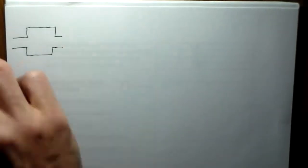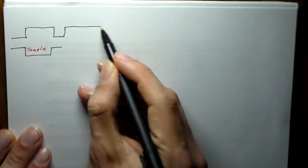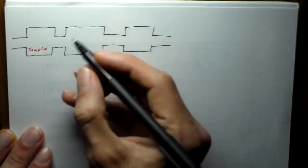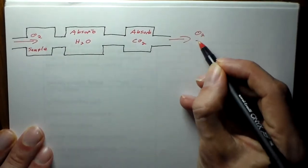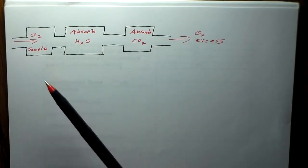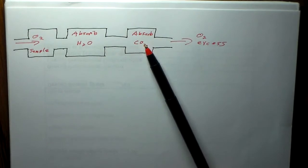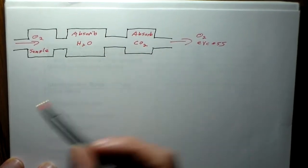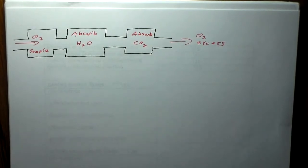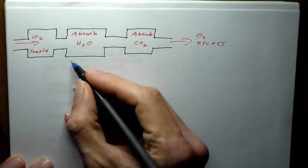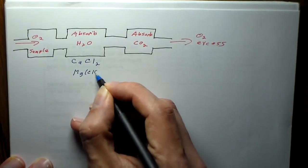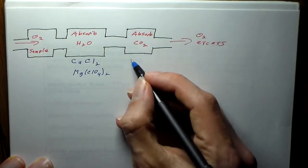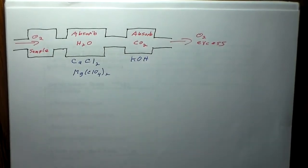So here we have our sample chamber and then two absorption chambers. These absorption chambers contain different absorbents. You need something here that absorbs water, which could be calcium chloride or magnesium perchlorate (MgClO₄²⁻), and then something that absorbs carbon dioxide, which could be potassium hydroxide. So those are the possible substances you would use.